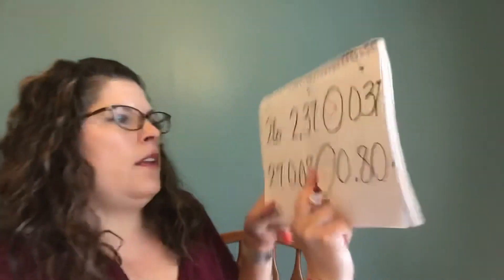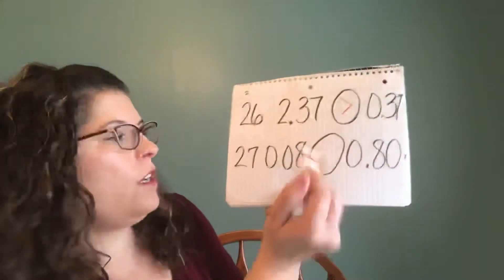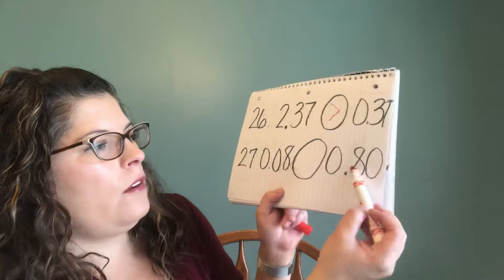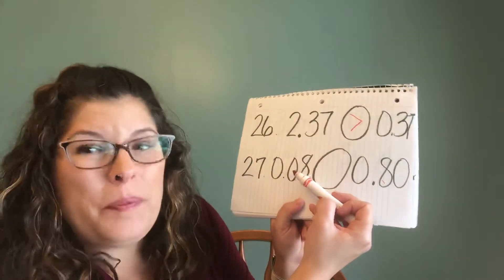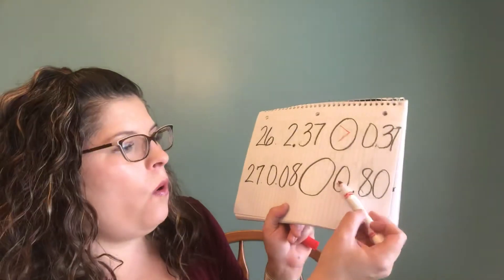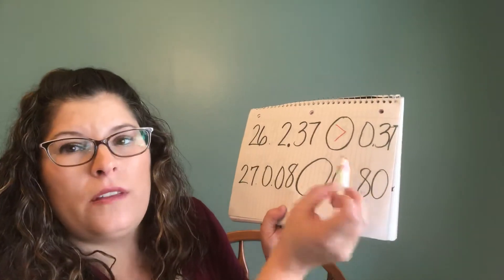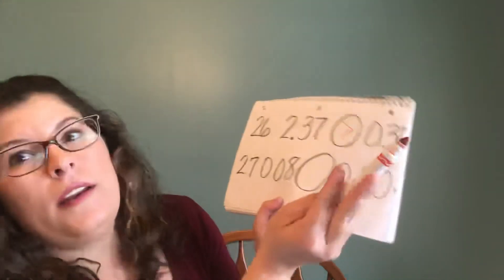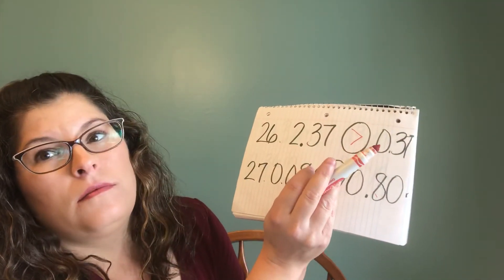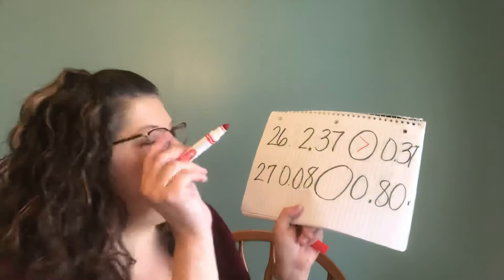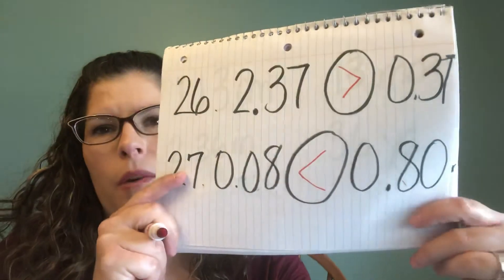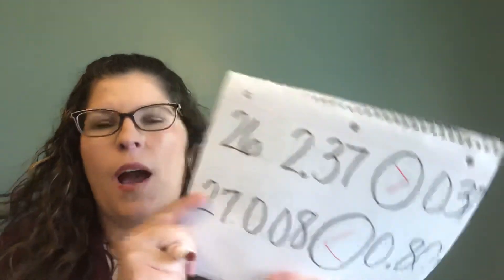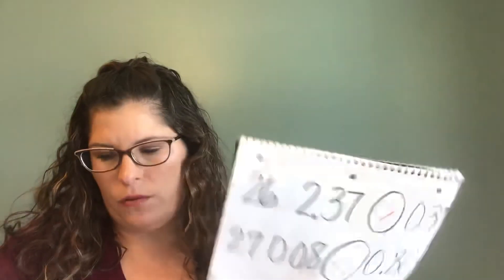Now let's look at our tenths position, which is a zero here and an eight here. This is eight hundredths — that's eight out of a hundred pieces. Or we have 80 hundredths. Which is more: eight out of a hundred or 80 out of a hundred? It is 80 out of a hundred. You're going to want to eat the bigger number. Say it out loud. All right, that's it for day 16.